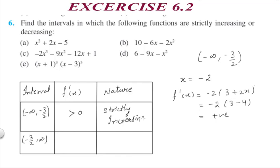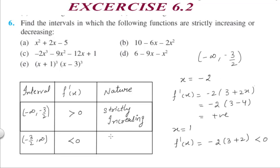For the second interval, minus 3/2 to infinity, we take x = 1. Substituting into f'(x) = -2(3 + 2x), we get minus 2 times (3 + 2), which gives a negative answer, less than 0. Hence the function is strictly decreasing in this interval. This is how we form the table for these questions.